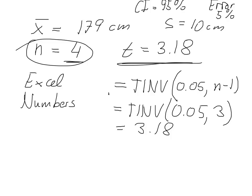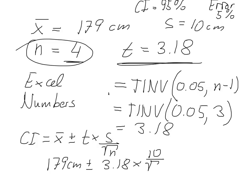Now going back to our equation, so the confidence interval we said is x bar plus minus t times S divided by the number of observations that we have. So we would have 179 cm plus minus 3.18, that was our t factor, times S, that is our standard deviation, 10 divided by square root of 4. And if we do that, we get 179 cm plus minus 3.18 times 5, and that gives us roughly very rounded 16 cm.